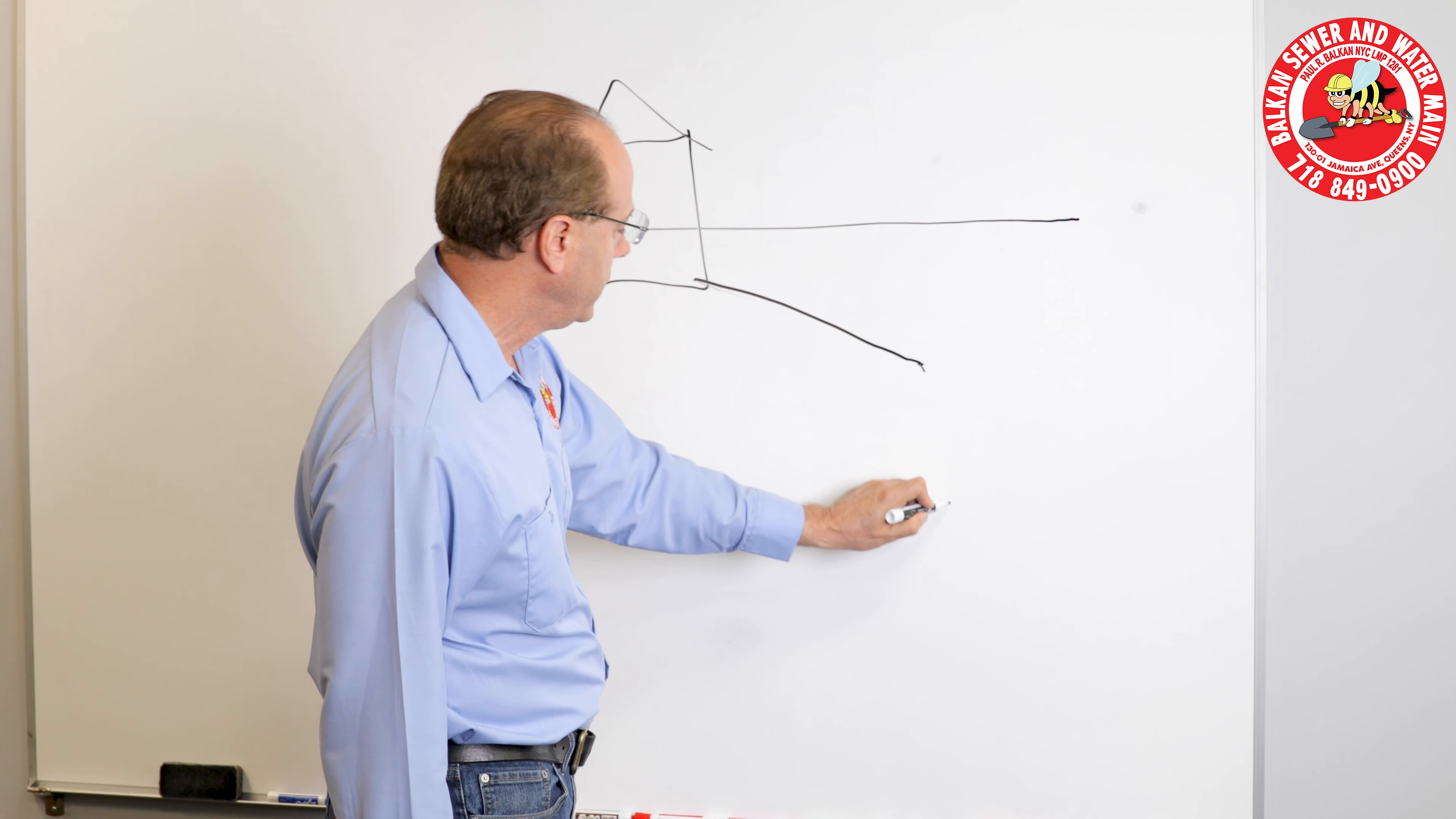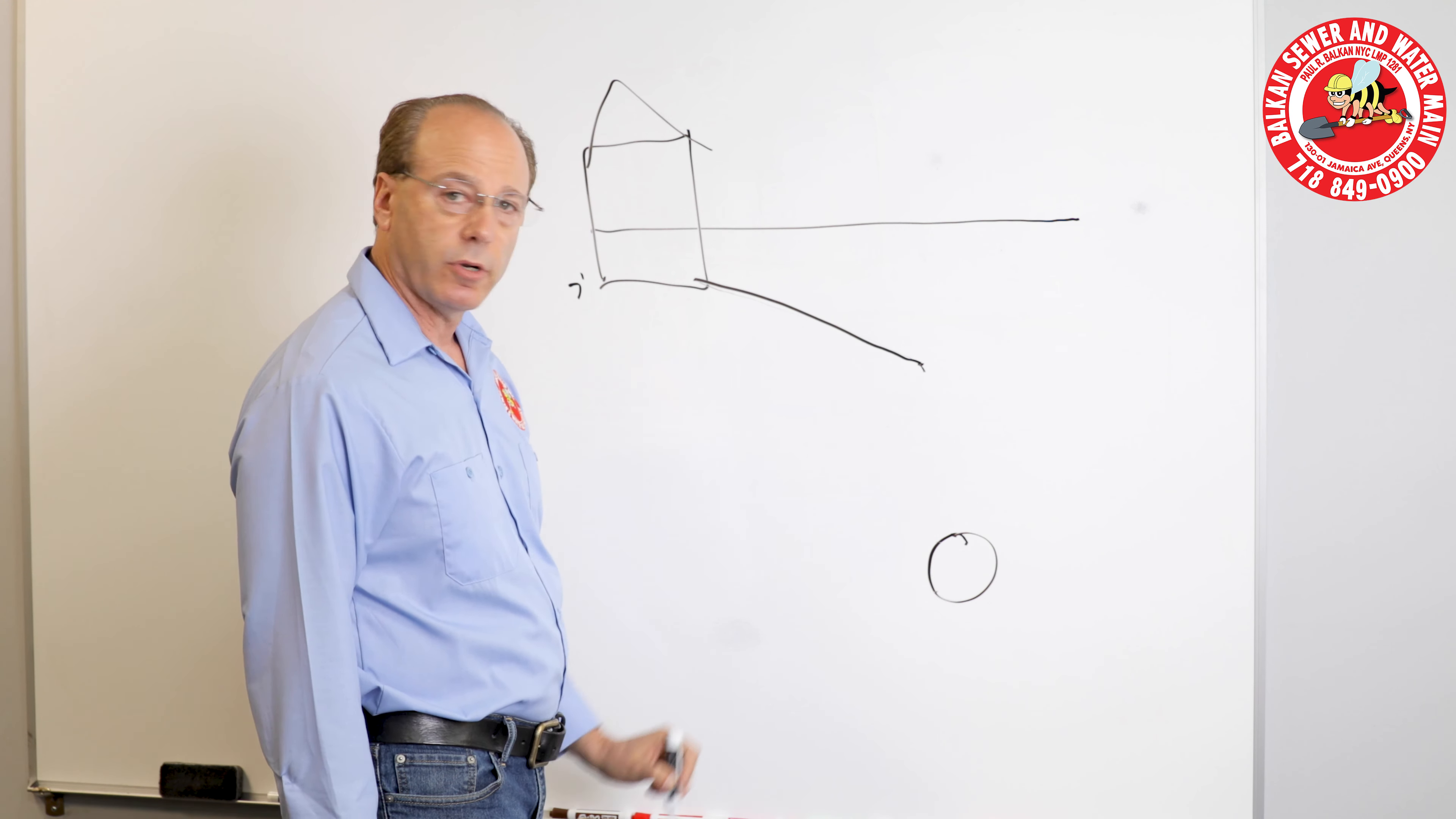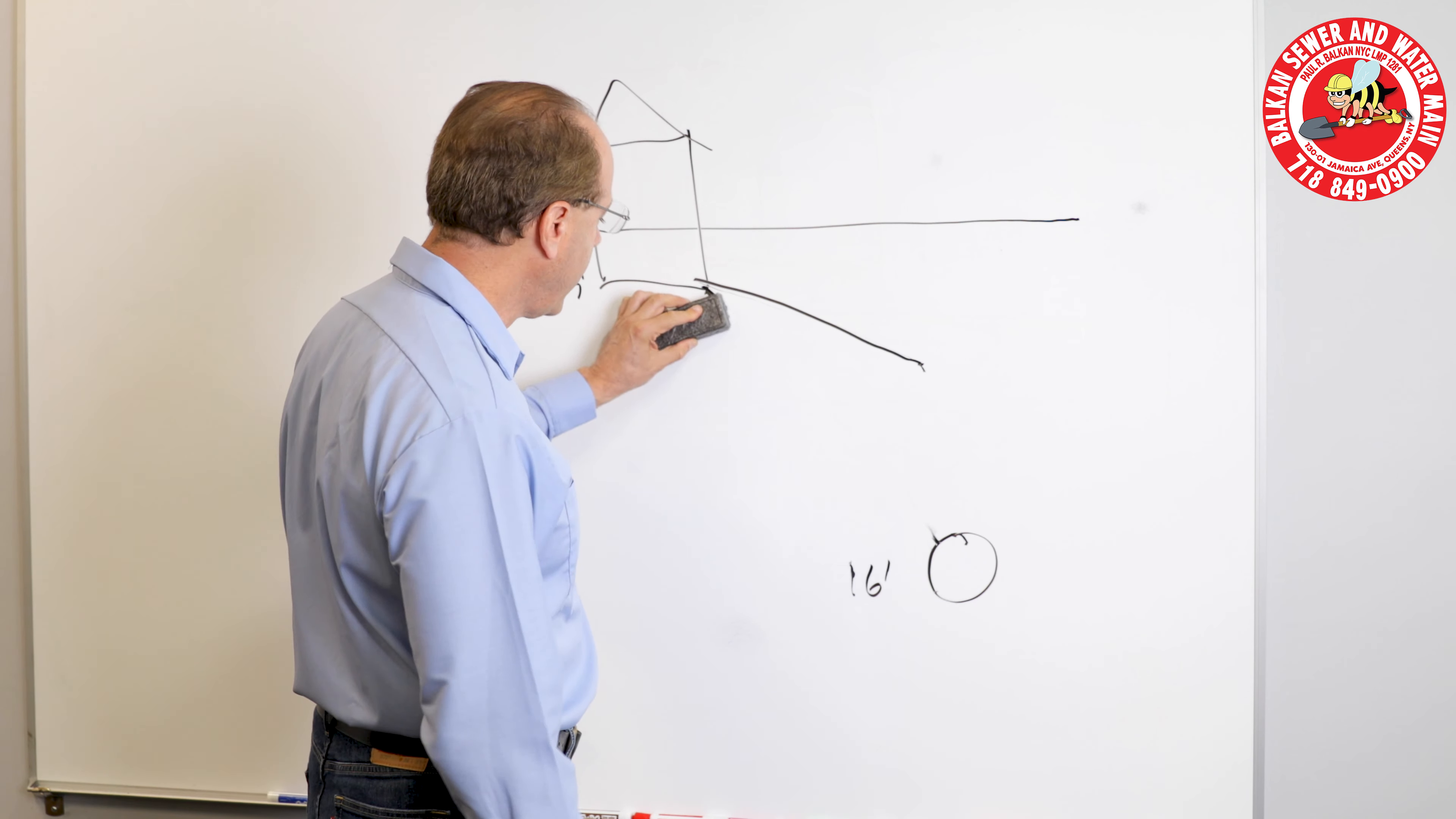if the sewer in the street is extremely deep, say you are about seven feet deep here but the sewer itself is 16 feet deep, you are not allowed to build your sewer connection with that much pitch. It goes against code and it goes against good plumbing practices.